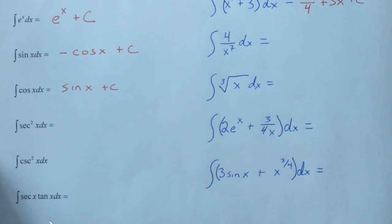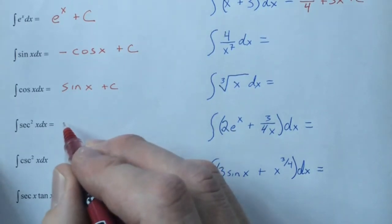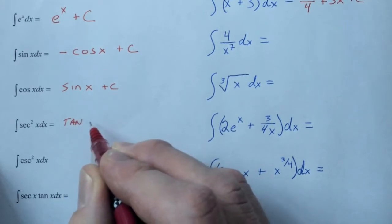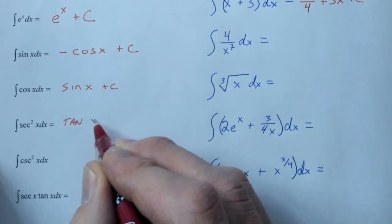The other trig functions aren't as bad. Secant squared, we know, is the derivative of tangent, so therefore, the antiderivative of secant squared will be tangent.